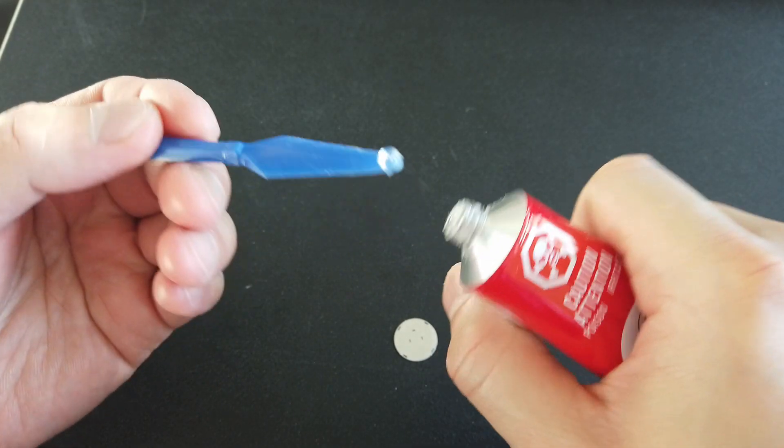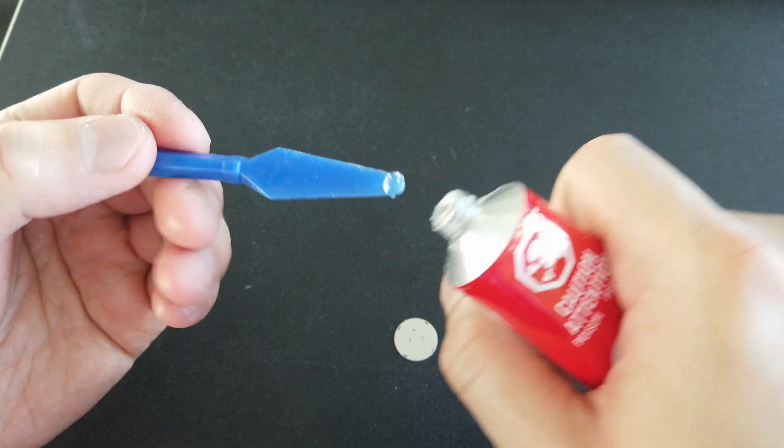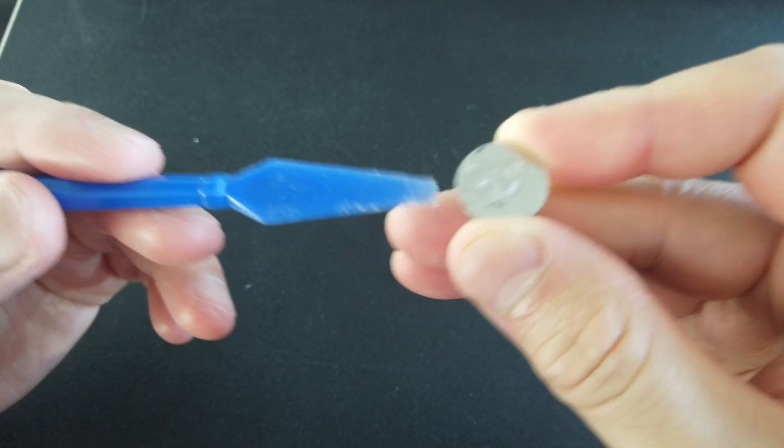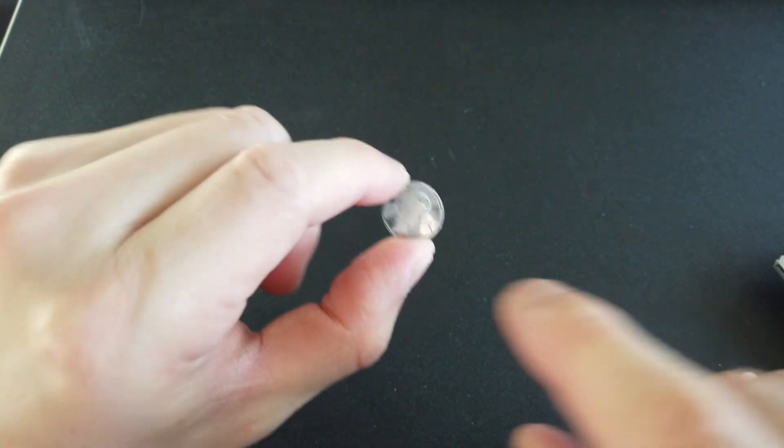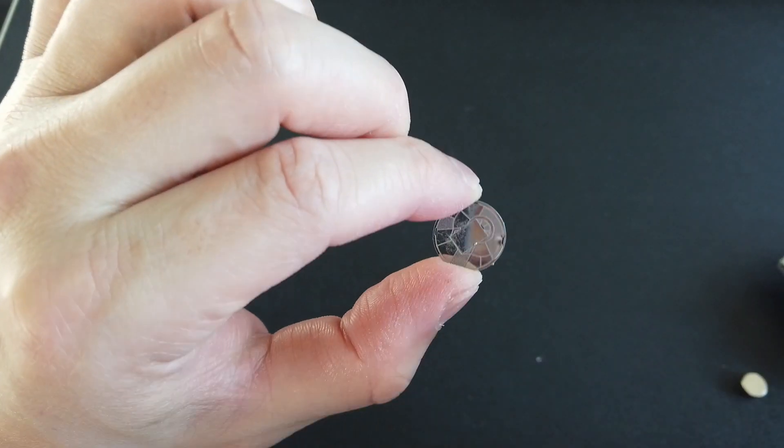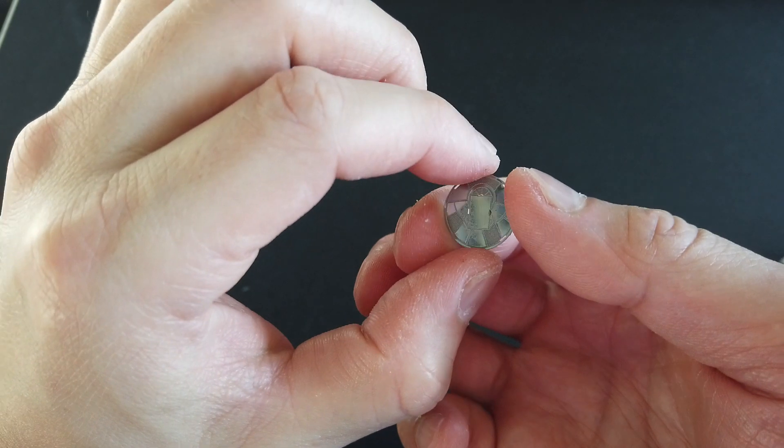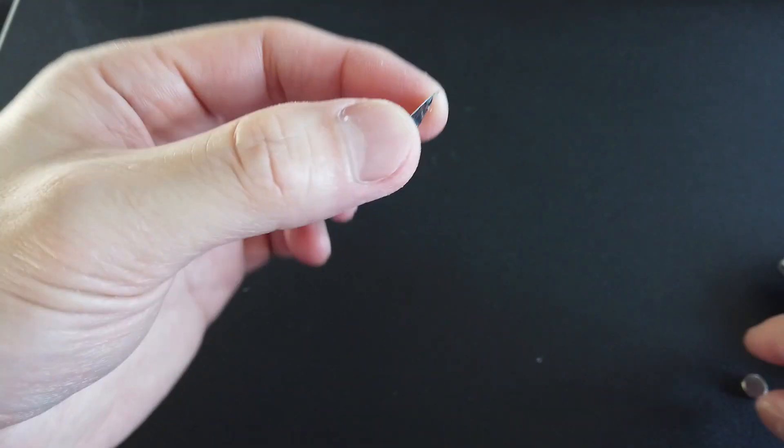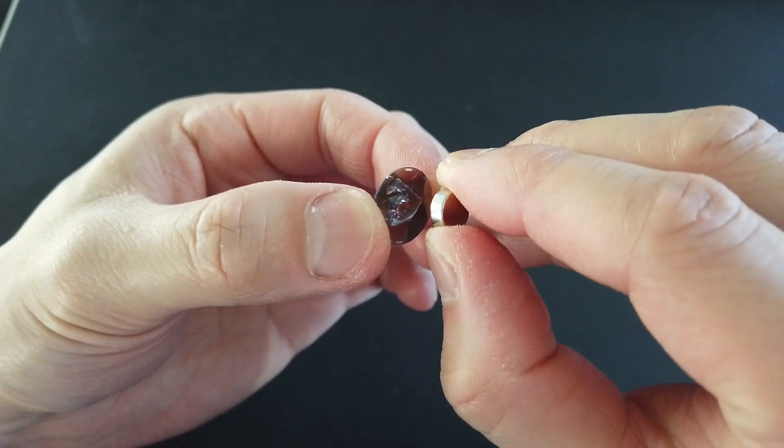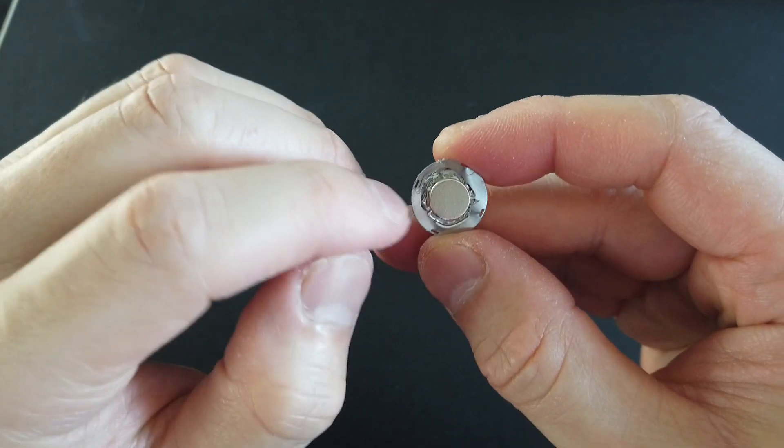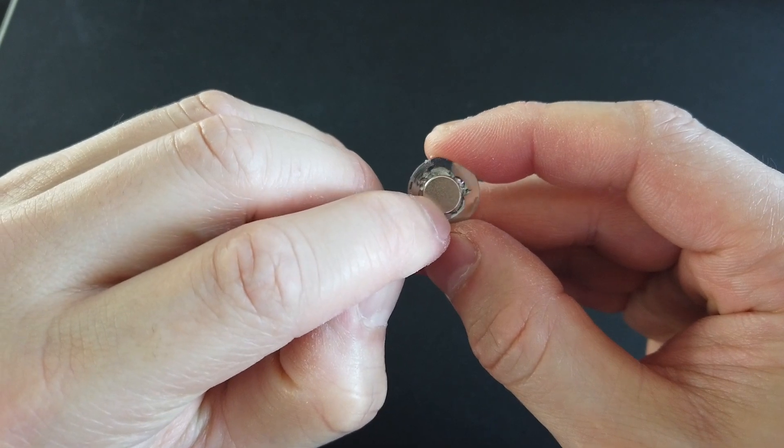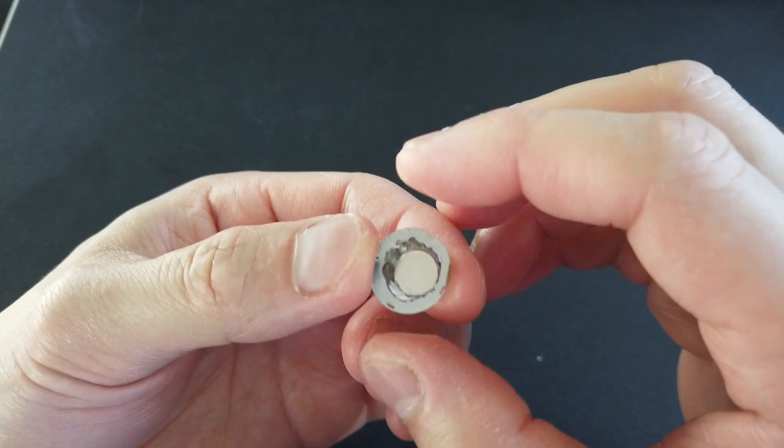If you have some sort of a spatula-like tool like this, it works best, and you can apply it very easily. One thing to note too is that there are holes underneath, when you put the magnet on, it might push some of the glue out, so you might have to wipe that after. We want to center it as much as we can. Now we just need to let this dry.